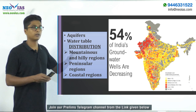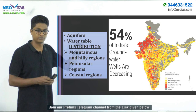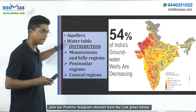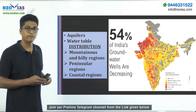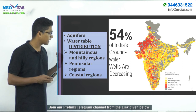The second term is 'water table,' which refers to the level of groundwater. In the rainy season the water table will be higher — the groundwater will be closer to the surface. During the dry period, the groundwater will be deeper in the crustal region. Now regarding the distribution of groundwater in India, we can broadly divide regions into three: mountainous and hilly regions, the peninsular region, and the coastal region.